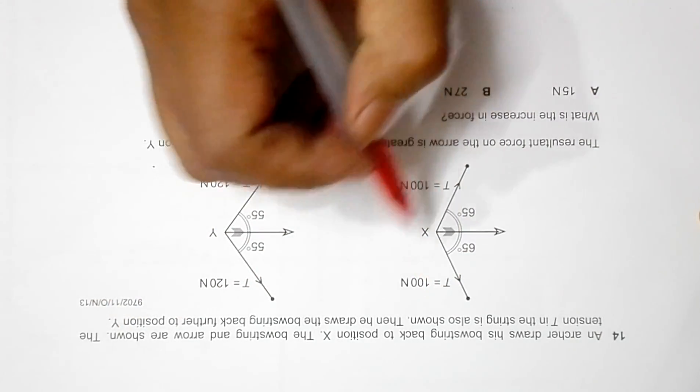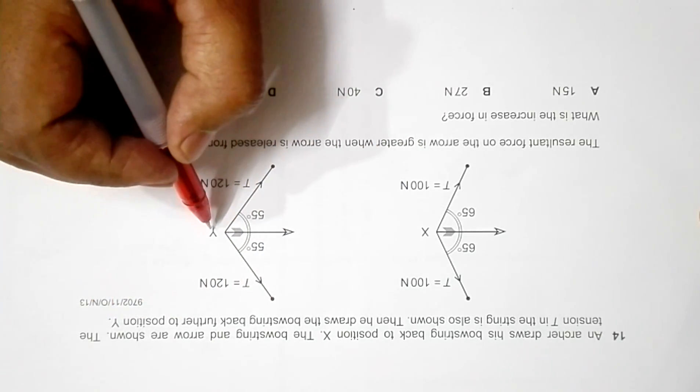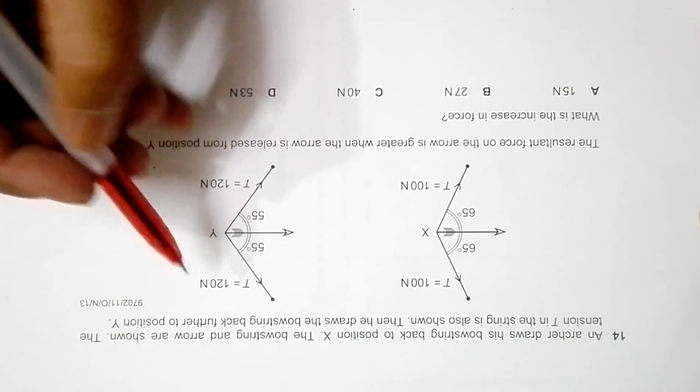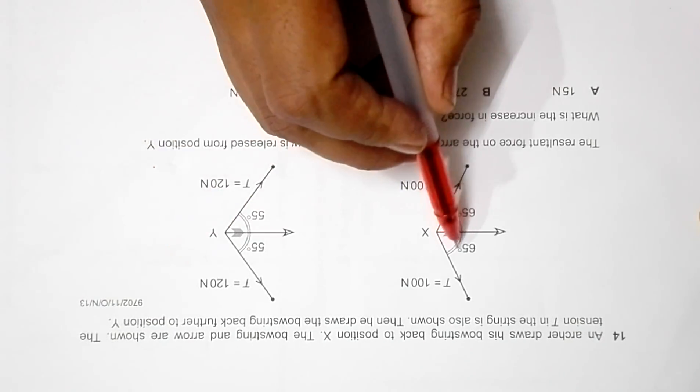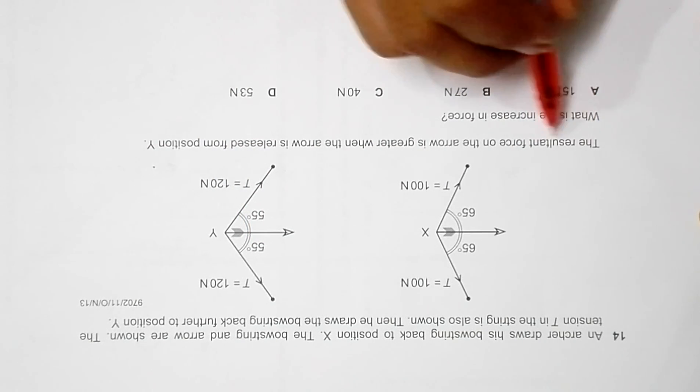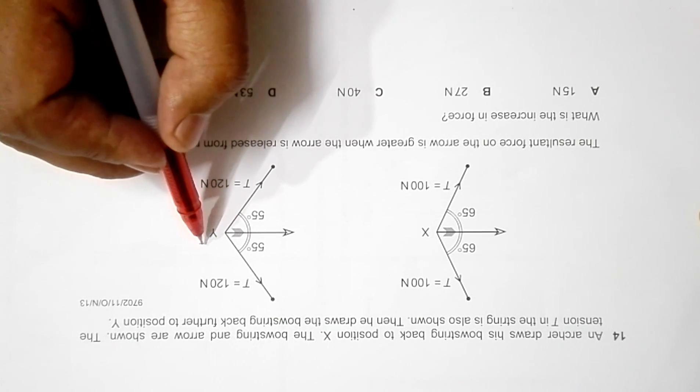Then he draws the bow string back further to position Y. This is position Y. When it pulls like this, as you can observe, the angle here has been different, smaller actually. The resultant force on the arrow is greater when the arrow is released from position Y.